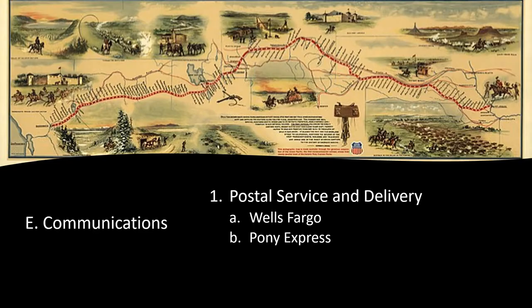Communication also improved dramatically. The number of post offices went from 75 in 1790 to 28,498 by 1860. With the introduction of the steam-powered printing press there was mass production of newspapers, reducing the cost from six cents to a mere penny. Express delivery service named Wells Fargo began in 1852, joining other express companies to form the Overland Mail Company, which gave twice-a-week mail service between St. Louis and San Francisco. In 1860, the Pony Express was founded to deliver mail between St. Joseph, Missouri, and Sacramento, California, with riders changing horses every 10 to 15 miles.